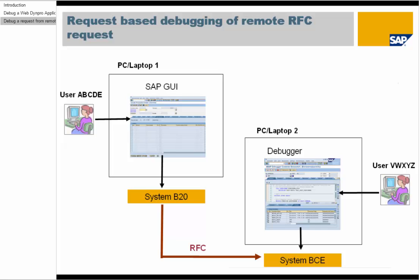Now we will see how to use request-based debugging in situations where the user who sets a breakpoint and the user who sends the request are two different end-users, and the request is coming physically from another PC or laptop. You can experience such situations in support, where a request is coming from one user via remote SAP GUI or browser via WTS, and you want to debug the code with your user on your machine. We will take an RFC request as an example.